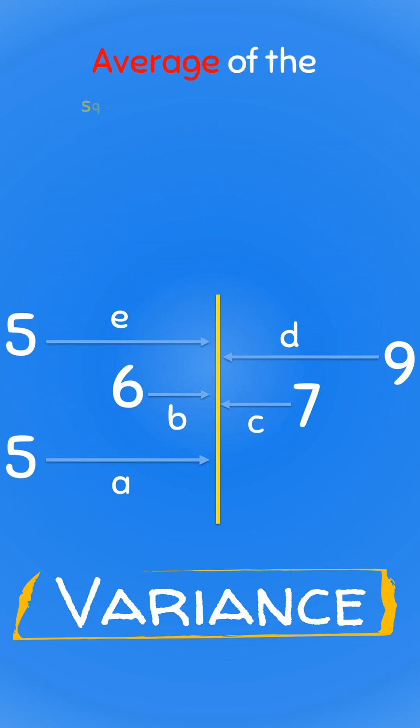It is obtained by finding the average of the squared deviations of all data points from the mean of the data.